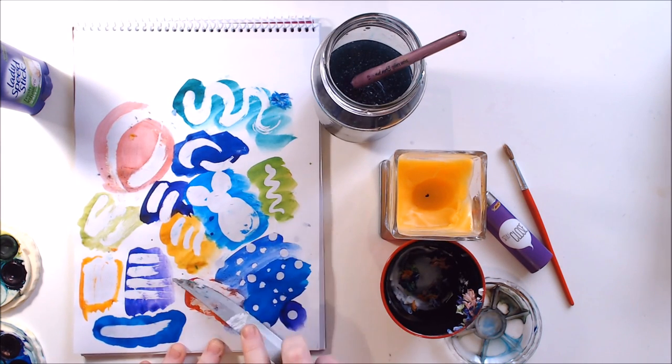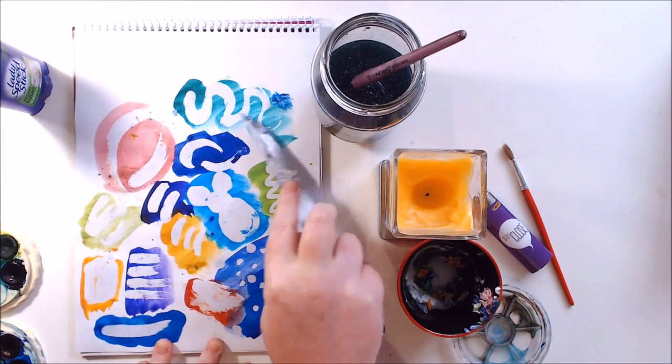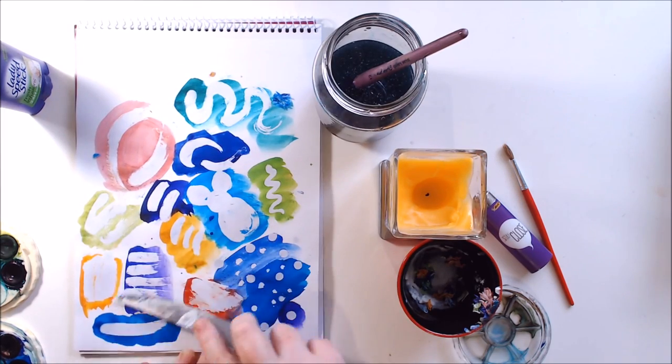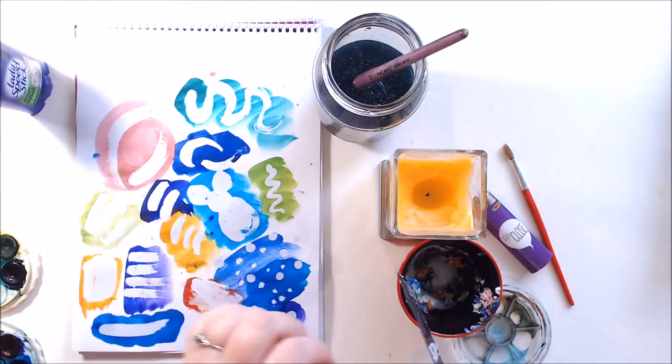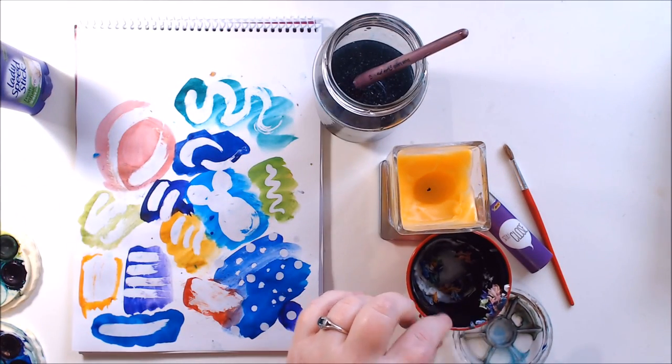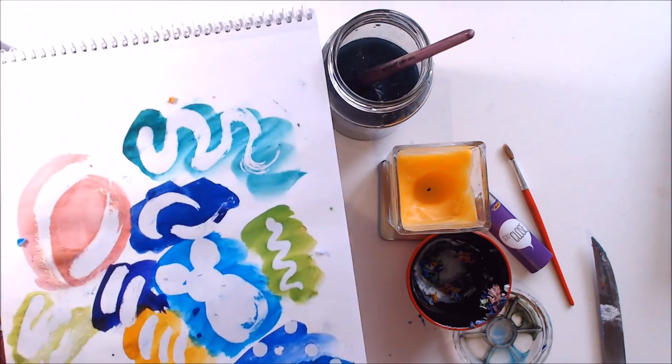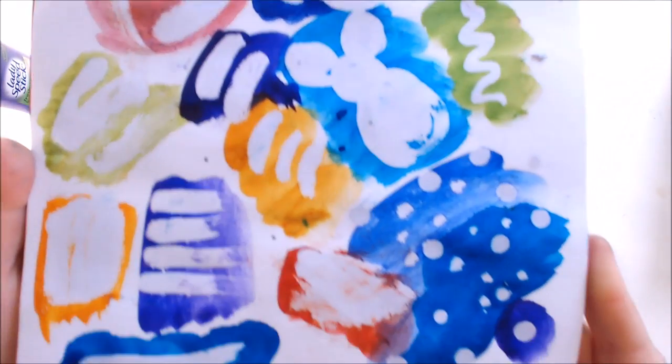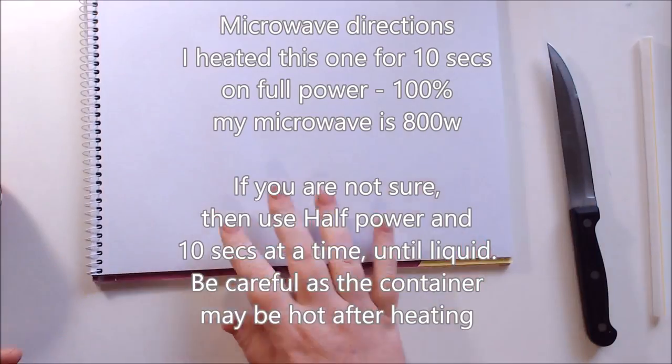And once you've got all the little bits of deodorant off you'll find that it's created quite a crisp clear resist. It's not like candle wax or anything like that where it seems to spread out. This will stay where you put it, which is super handy if you're trying to do something specific or if you're trying to make like a white section of your artwork, say like stars or something like that where you really don't want it to bleed through. But as you can see it has created a great resist.